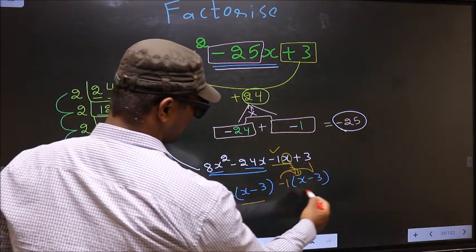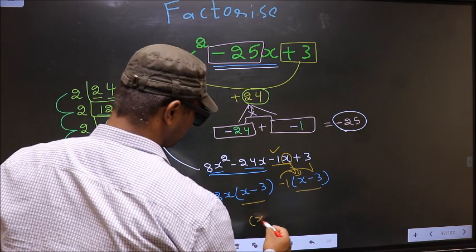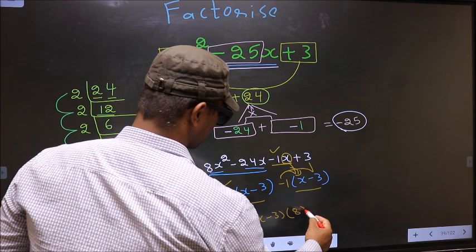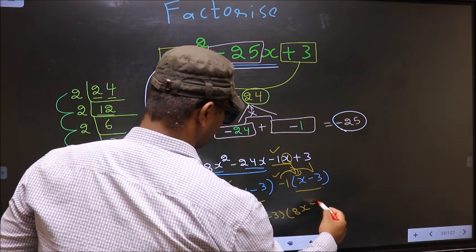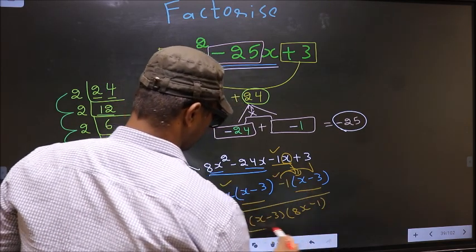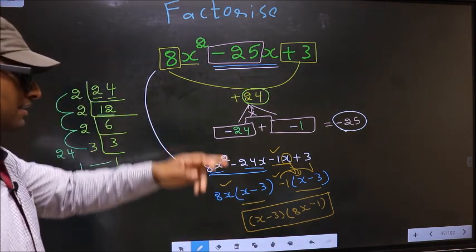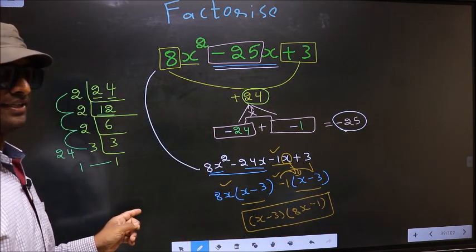Now you take out x minus 3 common. So here you have 8x and here you have minus 1. This is our answer. Am I clear? Thank you.